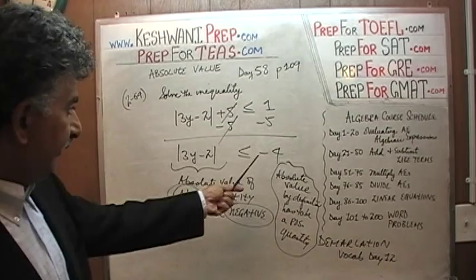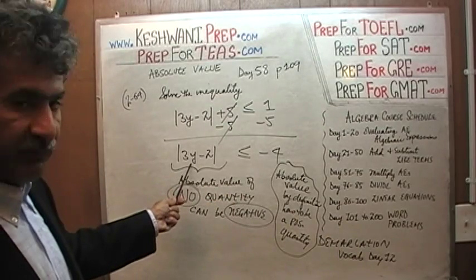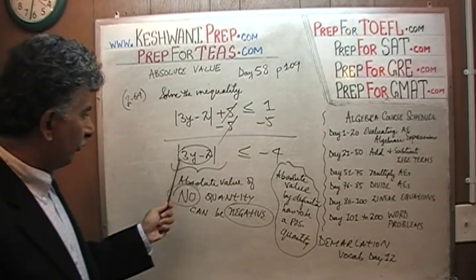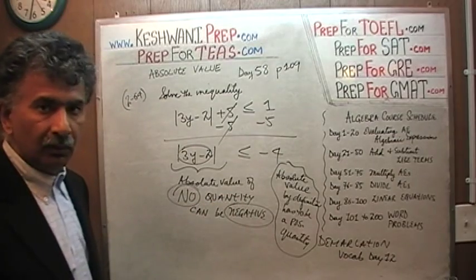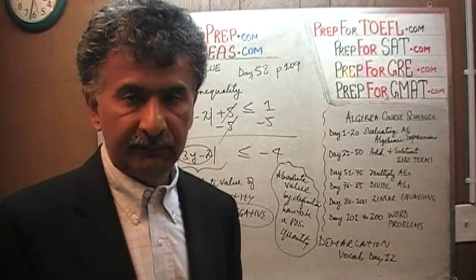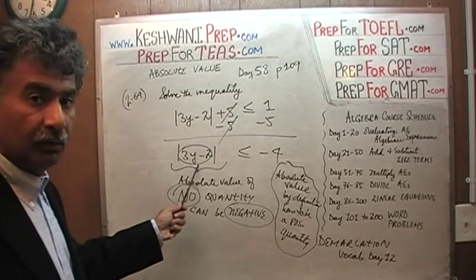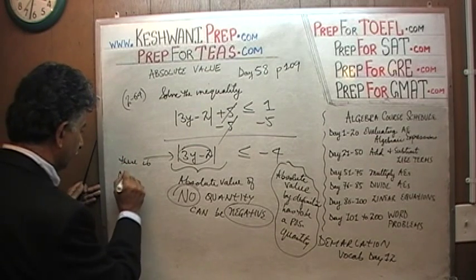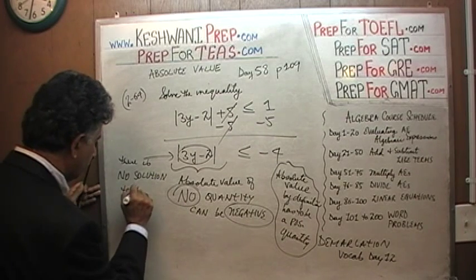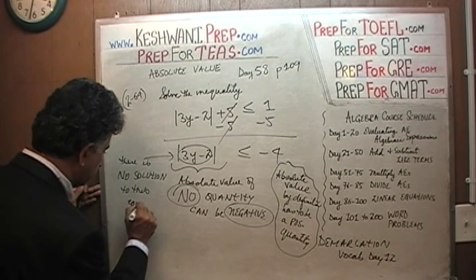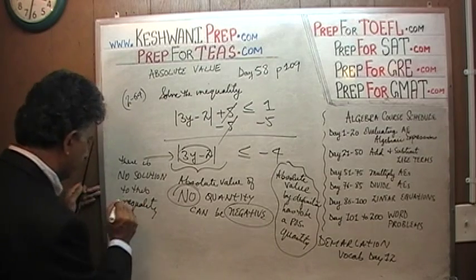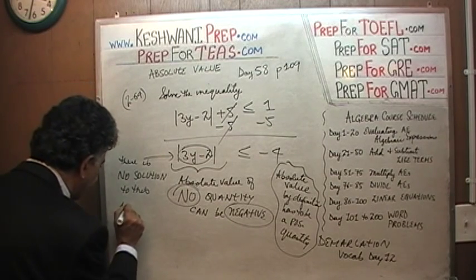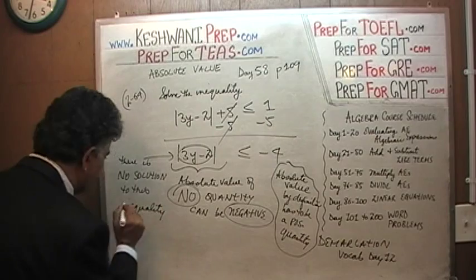This inequality is telling us that we have some quantity, 3y minus 2, and when we take the absolute value of it, it happens to be something less than negative 4. But absolute value cannot be a negative number — it doesn't exist. There is no solution to this inequality.